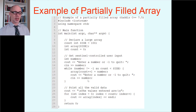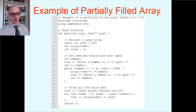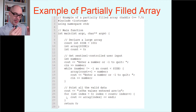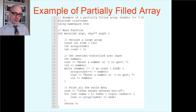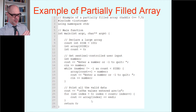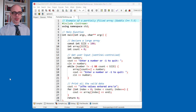At some point the user enters the sentinel of negative one. At that point on line 17, we check: is number not equal to negative one? That'll be false because the number actually is negative one, and that gets us out of the while loop on line 24. In this example, we're just going to print all that data back out. Now we do know how much data was entered because of that count variable. We use a for loop with count as the limit on line 25, printing out only however many things the user entered — not the whole array, just the valid data.